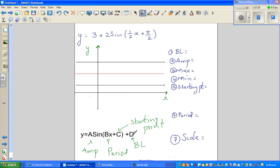Let's start. The baseline is when you compare this formula with this, your D is 3. The amplitude is the coefficient of sine, which is 2. The maximum is baseline plus amplitude, so 3 plus 2 which is 5. The minimum is baseline minus amplitude, which is 3 minus 2, which is 1. This is maximum, this is minimum, and this is your baseline. So baseline is 3, this is your x-axis and y-axis, not drawn to scale.